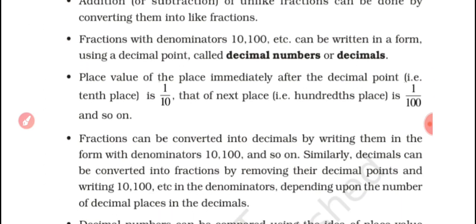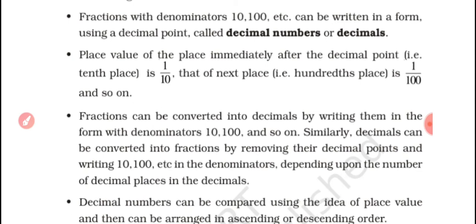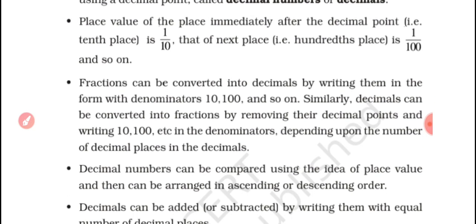A fraction can be converted into a decimal by writing it in the form with denominator 10, 100, and so on. Similarly, a decimal can be converted into a fraction by removing the decimal point. A decimal fraction can be written as a common fraction, and a common fraction can be written as a decimal fraction. The denominator depends upon the number of decimal places in the decimal.